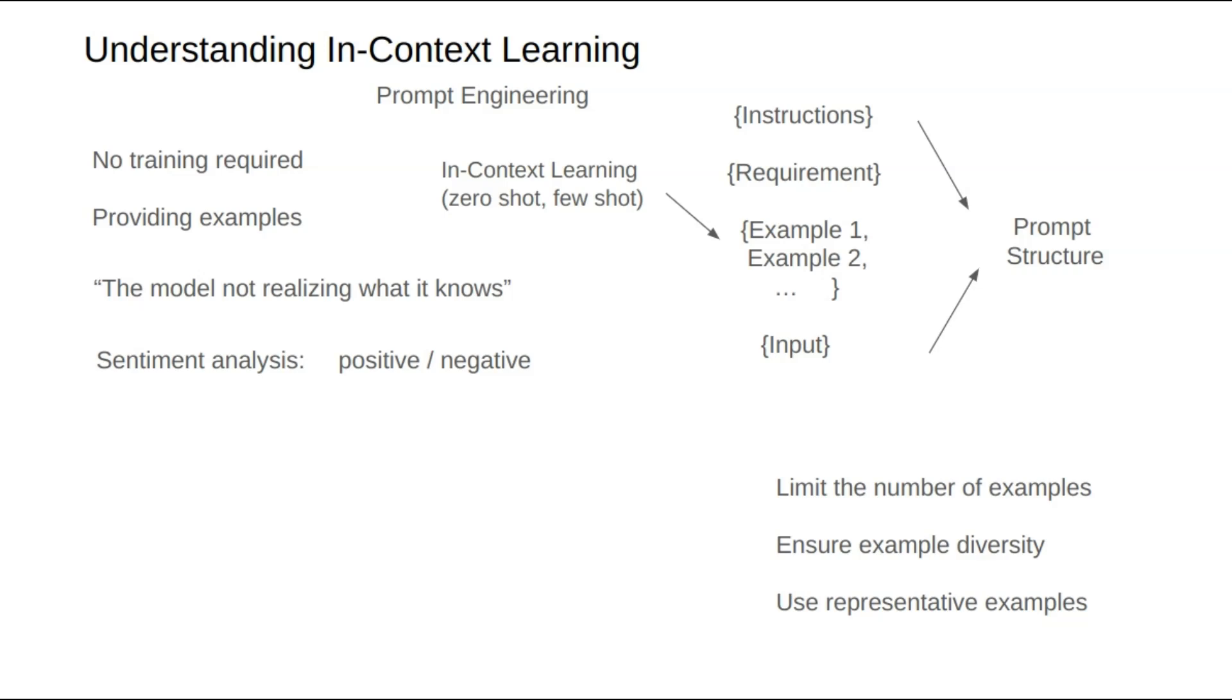Finally, let's compare in-context learning with model fine-tuning. In in-context learning, examples are provided externally, serving to trigger or activate the model's existing abilities. The knowledge remains external to the model.